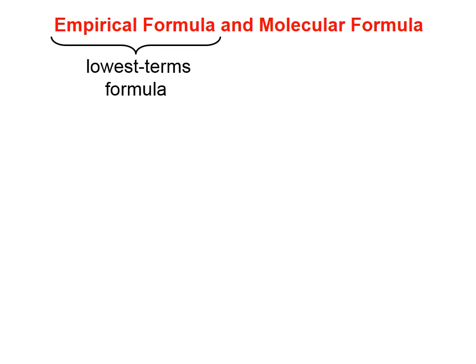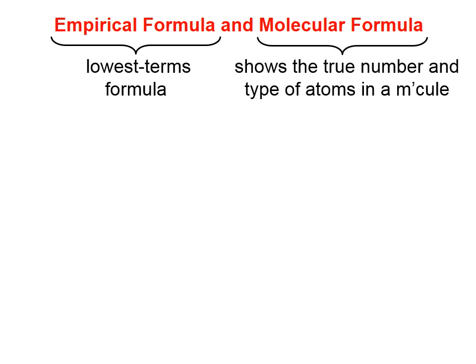The empirical formula is the lowest terms formula, the lowest whole number ratio. The molecular formula, on the other hand, shows the true number and type of atoms in a molecule.